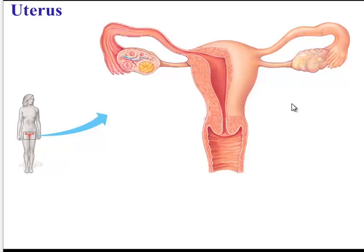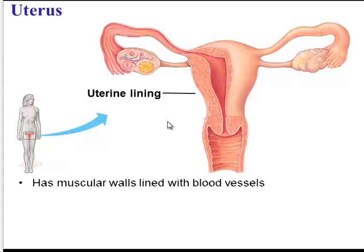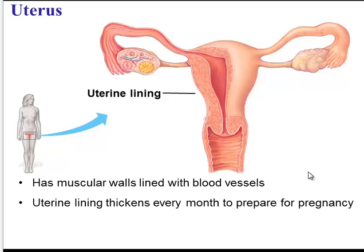So here we are in the uterus. An important structural feature of the uterus is that it has a thick uterine lining, muscular walls, and those walls are lined with blood vessels. Those are important because they will help support the baby during pregnancy. Every month, a female's uterine lining will thicken just in case she does get pregnant.